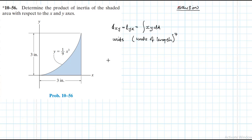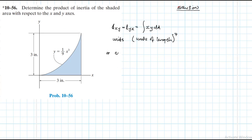The product of inertia of an area with respect to the x and y axis can either be negative, positive, or zero. A positive value is not normally explicitly indicated. This depends mainly on the location and orientation of the coordinate axes.